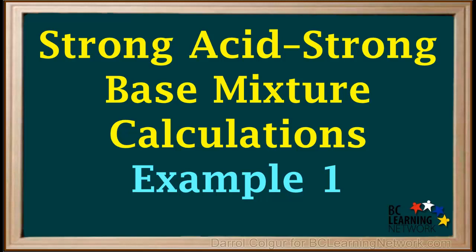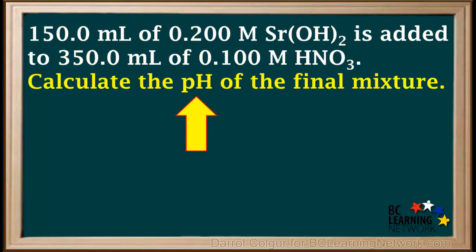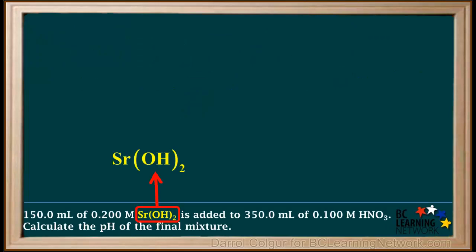Here we'll go over an example where a strong acid is mixed with a strong base, and we calculate the pH of the final mixture. We're given that 150 milliliters of 0.200 molar Sr(OH)₂ is added to 350 milliliters of 0.100 molar HNO₃, and we're asked to calculate the pH of the final mixture. We'll point out something important here.